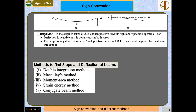Now the sign convention used for beam deflection: if we consider a simply supported beam AB or a cantilever beam AB with origin at A, x is positive to the right and y is positive upward. The deflection between A and C is negative as it goes downward. The slope is negative between A and C, positive between C and B; for the cantilever case, the slope is negative throughout.